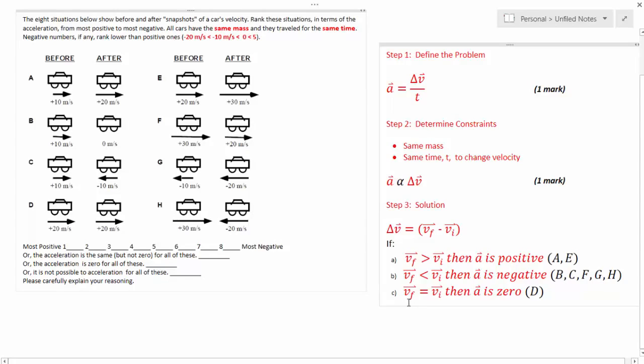And finally for c, if v-final equals v-initial, then my acceleration is zero, which is only picture d. Categorizing your solution in this fashion will also garnish you another point.